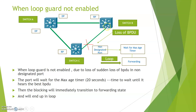What will happen when Loop Guard is not enabled and there is a sudden loss of BPDUs on a non-designated port? The non-designated port will wait for the maximum age timer to expire, and automatically the port will move to a forwarding state. Once this port moves to a forwarding state, frames will circulate continuously, resulting in loop formation.